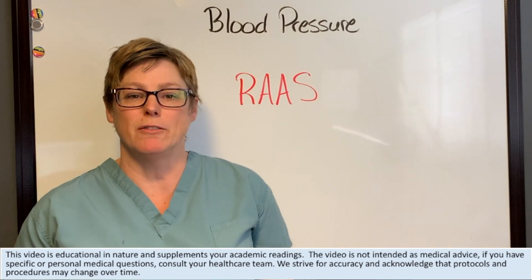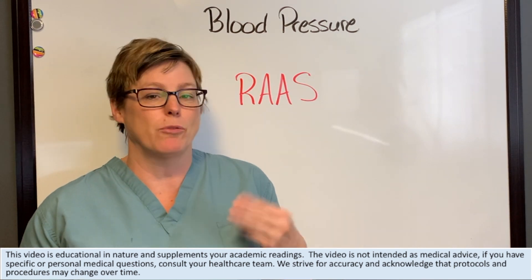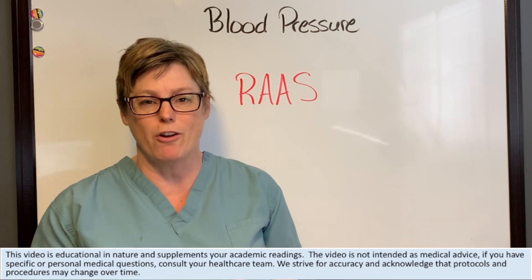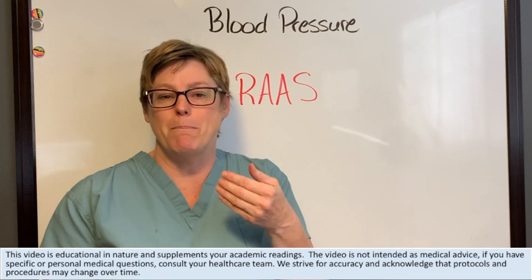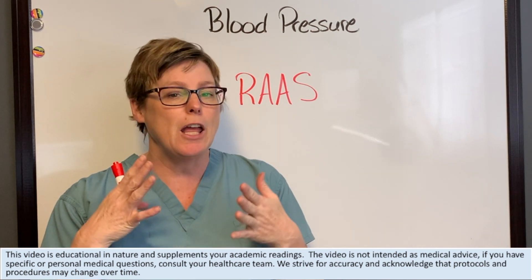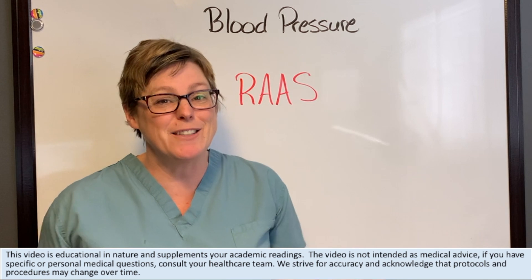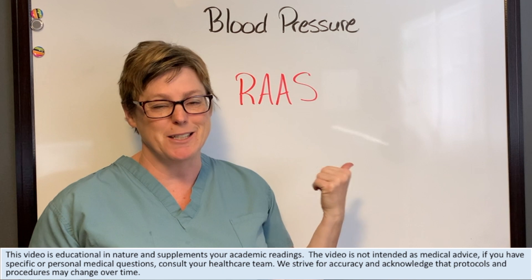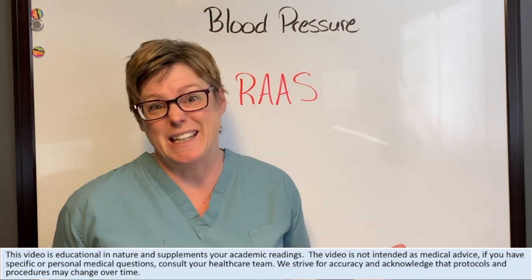We are continuing our series of videos on blood pressure. In previous videos I've talked about the three elements: heart rate, stroke volume, and peripheral resistance, and how that impacts our cardiac output. I've also talked about baroreceptors — those things that measure and evaluate the amount of stretch and recoil in our vessels and help our body retain blood pressure. In this video we're going to talk about the renin-angiotensin-aldosterone system, one of my favorites because it's such a complex and beautiful system.